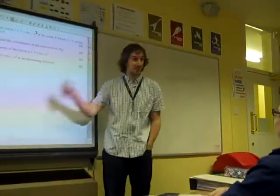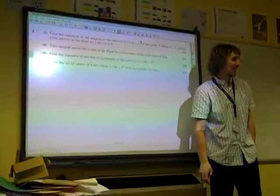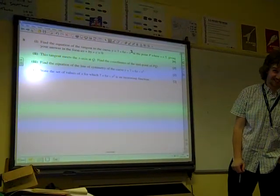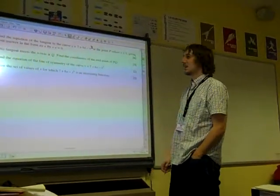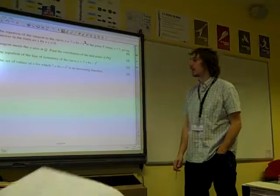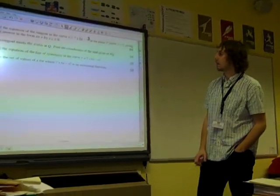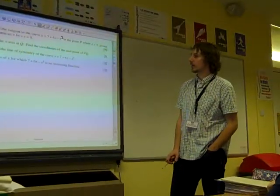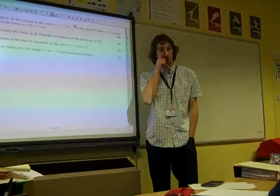We're recording. Okay, this is question 8 on Core 1, 2011. Find the equation of the tangent to the curve y = 7 + 6x - x² at point P, where x equals 5. Give an answer in the form ax + by + c = 0.